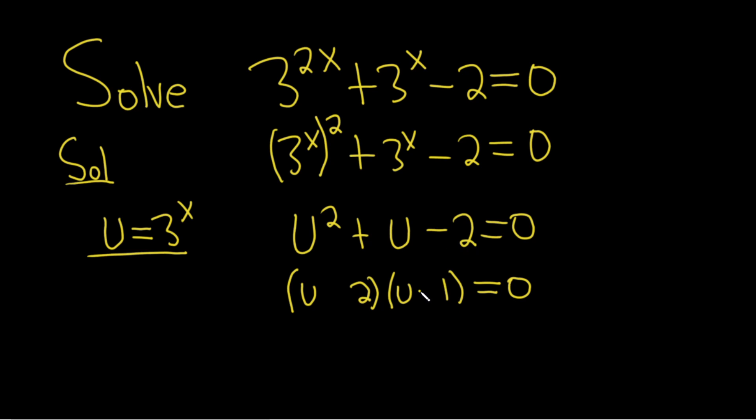They have to multiply to negative 2 and add to positive 1. So make the 1 negative and the 2 positive. Checking: u times u is u^2. The inside gives 2u, the outside gives -u. Adding the inside and outside, 2u + (-u) gives u, which is the middle term. And 2 times -1 is -2. Everything looks good.